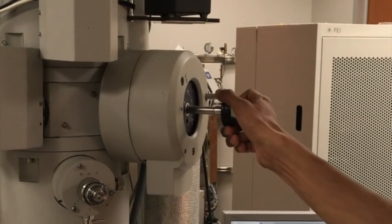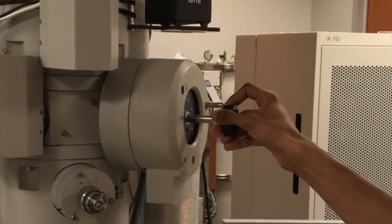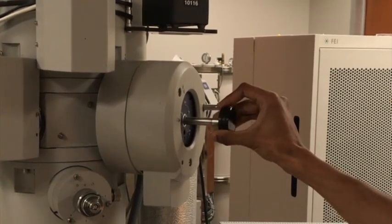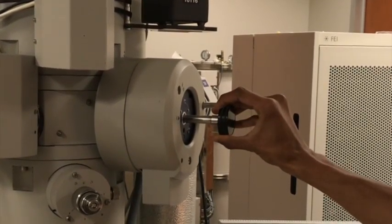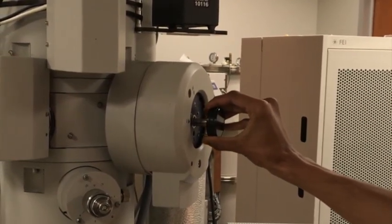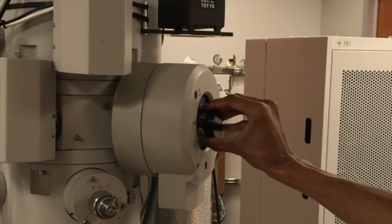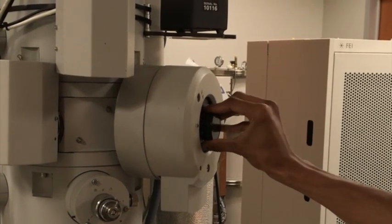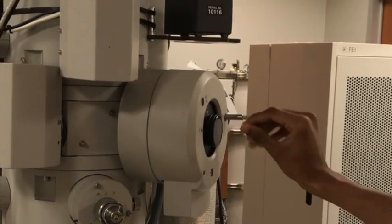You can turn the holder now in the counterclockwise direction, and once it's in the right position, you will feel a suction pulling the holder into the column. You try to resist this force to make sure the loading process is as smooth as possible.